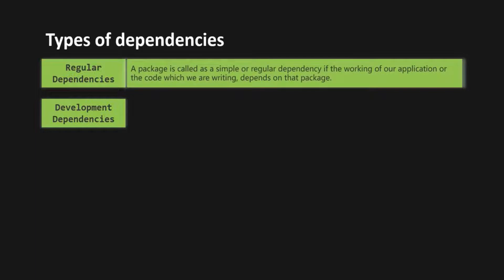A package is called a simple or regular dependency if the working of our application, which we are creating, or the code which we are writing, depends on that package. Basically, a regular dependency is the dependency on which the working of our application depends. From these regular dependencies, we might be using some APIs, methods, or classes in our own code.